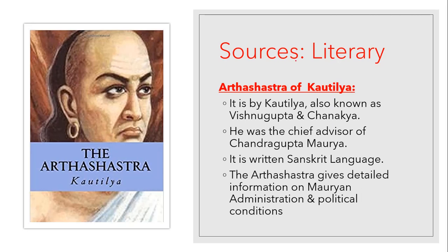Moving on to sources — literary sources and archaeological sources. Under literary sources we have the Arthashastra by Kautilya. Kautilya was associated with Chandragupta Maurya and was a very brainy man. He is also known as Vishnagupta or Chanakya, and he was the chief advisor of Chandragupta Maurya. He wrote the Arthashastra in Sanskrit.